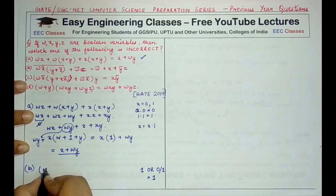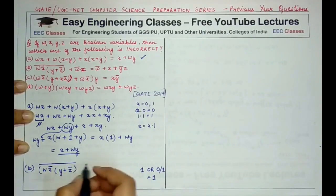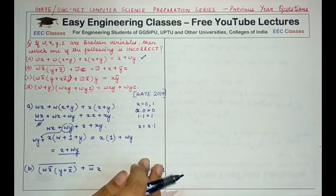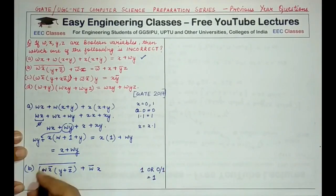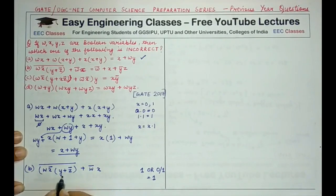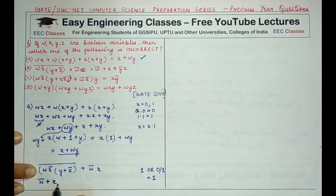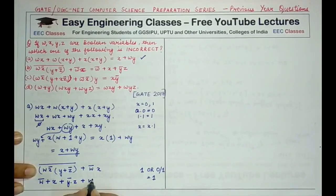Option B has: (wx̄·(y + z̄))' + w̄x. Applying De Morgan's law, every value is negated and the operator changes. So wx̄ becomes w̄ + x, and the complement of (y + z̄) gives ȳ·z. This yields w̄ + x + ȳz, plus the remaining w̄x term.